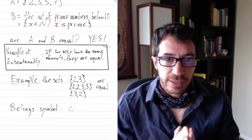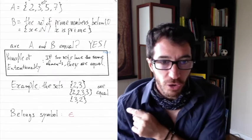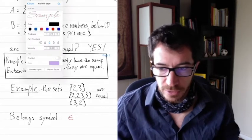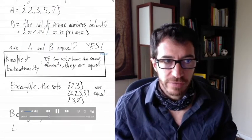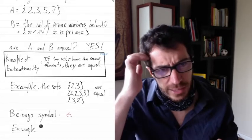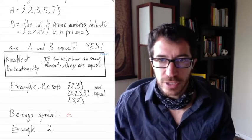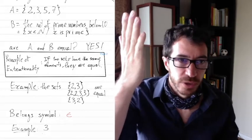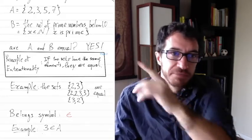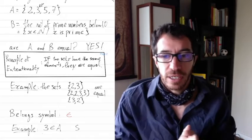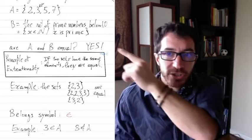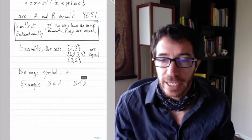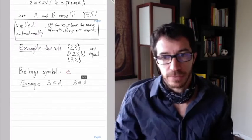The membership symbol is going to be the most important symbol for the whole course. We're going to be developing all of mathematics out of just one symbol. For instance, the number 3 belongs to set A in our example. That's how we write it: 3 belongs to A. That means 3 is in the set A, while 8 is not in the set A. The symbol is sometimes called epsilon, because it's a Greek epsilon.